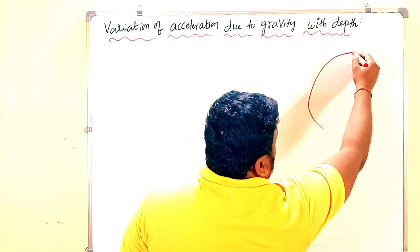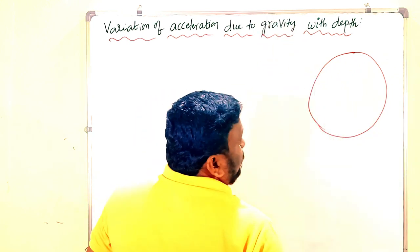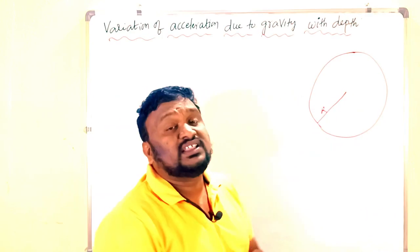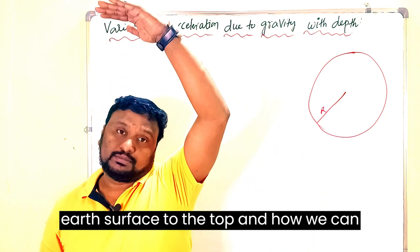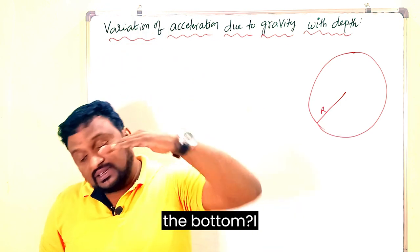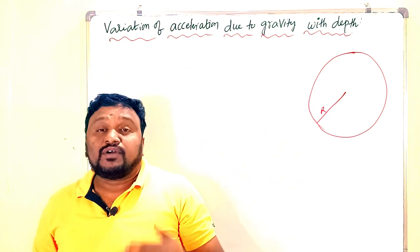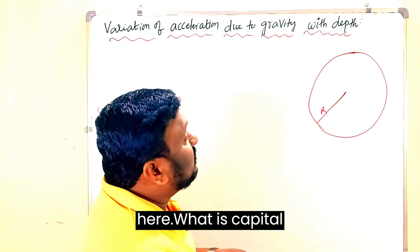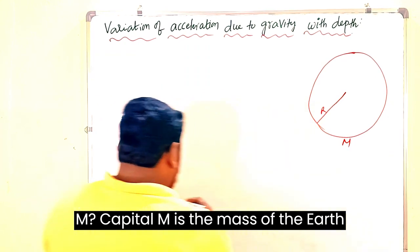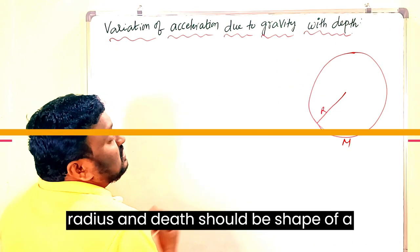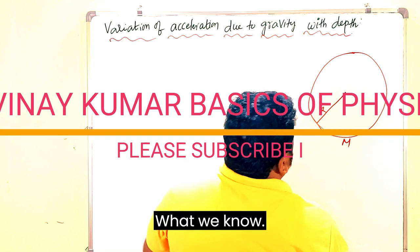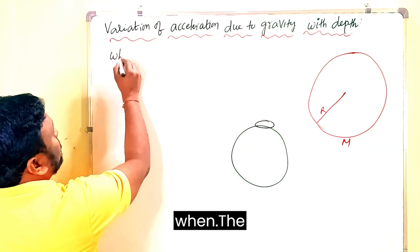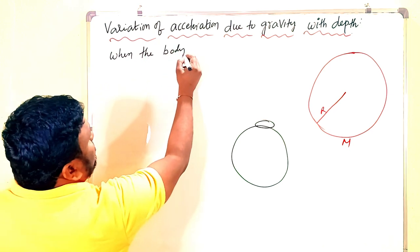Imagine the Earth as a sphere having some radius R. Height is measured from the Earth's surface upward, while depth is measured from the surface downward, inside the Earth. Here, capital M is the mass of the Earth and R is the radius of the Earth. When the body is on the surface of the Earth, we consider these quantities.